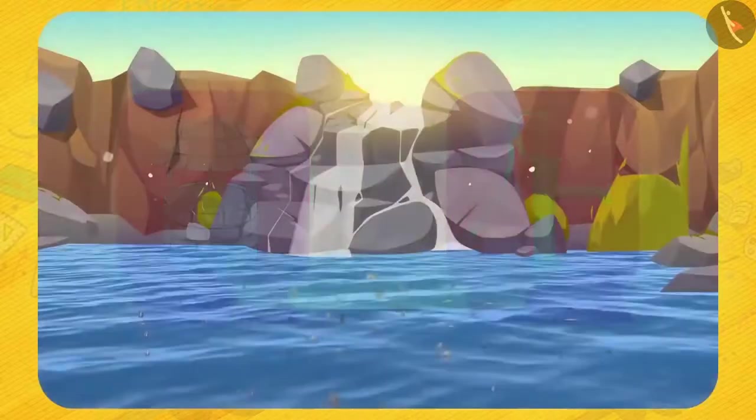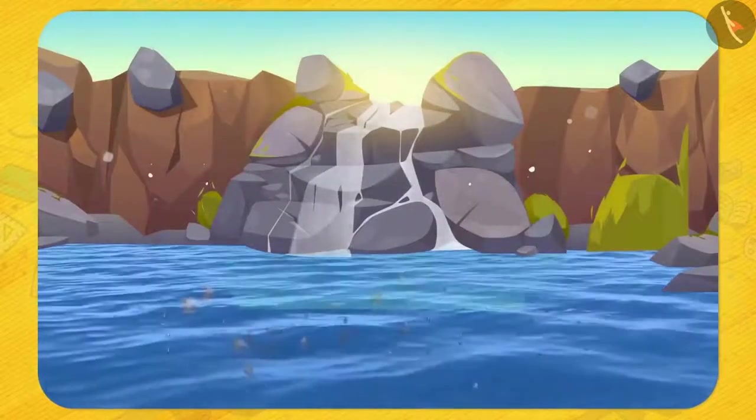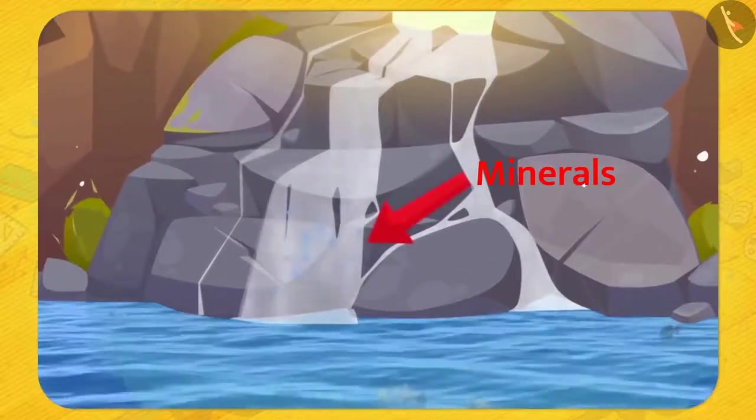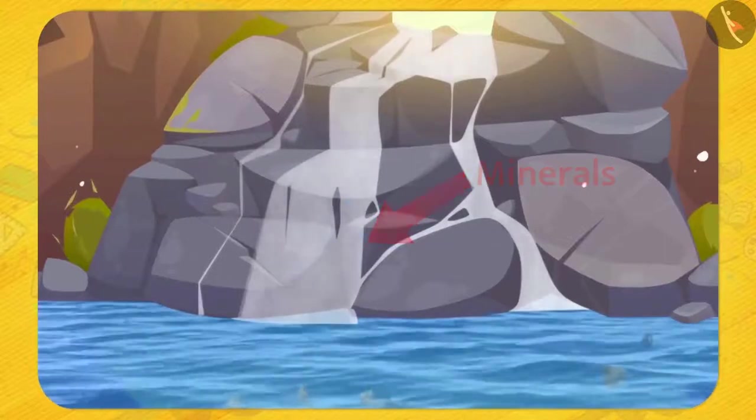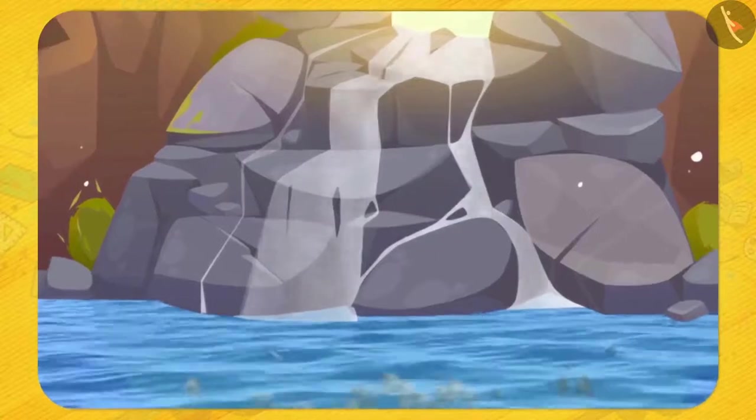Friends, some part of the rainwater also flows from the top of the rock, dissolving the soluble minerals present in the rock and finally mixes in the sea. In this manner, rainwater carries many minerals from the land to sea, which are used by sea creatures.